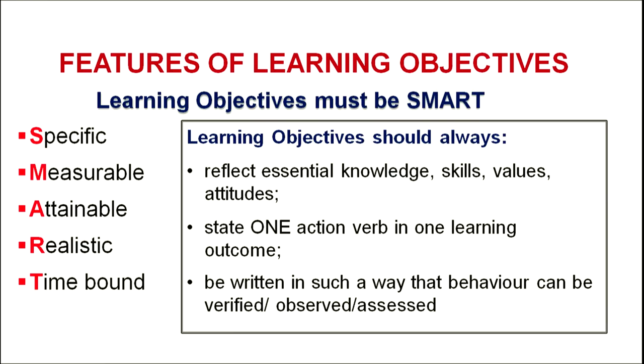Learning objectives should be SMART. Specific means very clear and unambiguous in nature. Measurable means the ability which we can assess easily. Attainable — measurable and attainable are synonyms and can be easily assessed. Realistic means it should be achievable in a specific period of time, and certainly realistic in terms of age appropriateness. Time-bound in terms of administrative purpose. So learning objectives should always reflect essential knowledge, skills, values, and attitudes which include dispositions also.